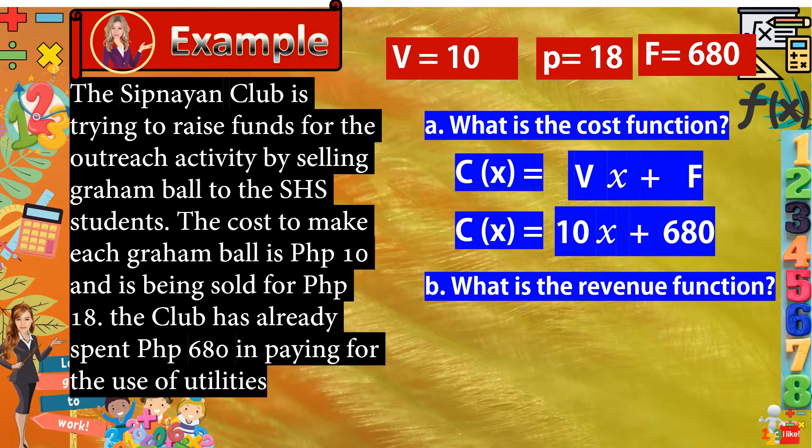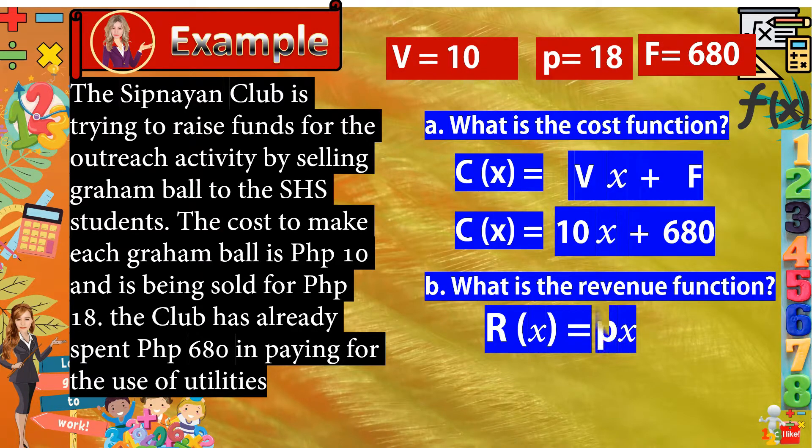Next question, what is the revenue function? Based on the discussion, the revenue function R(x) is equal to the price of the product times x. So, based on our given, the price is 18. Therefore, we have R(x) is equal to 18x. So, this is now the revenue function.